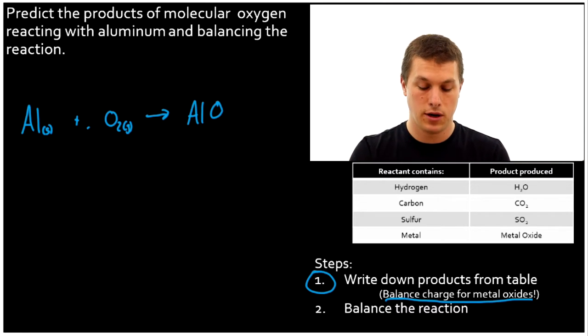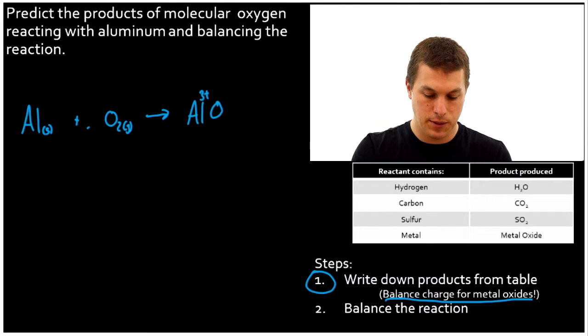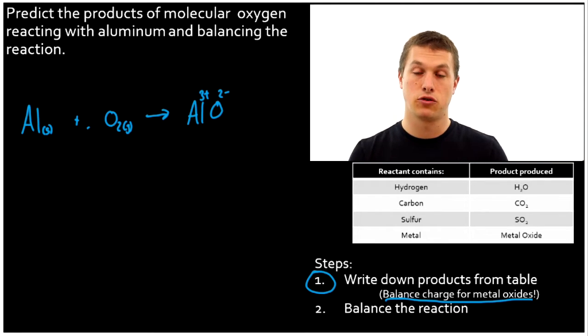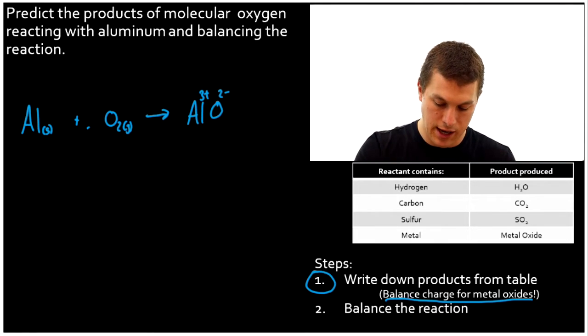Let's balance those charges now. What's the charge on aluminum? Well, if we look at our periodic table, we'll see that it's 3+. And if we look at the periodic table for oxygen, we'll get 2-. And now we just cross those over to balance them and we get Al2O3.